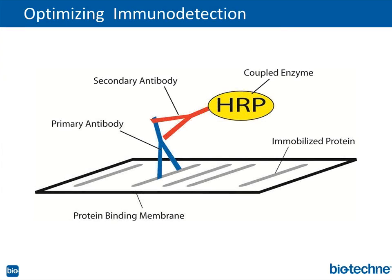Assuming that transfer worked wonderfully, we now want to move into immunodetection. Of course, we could stain the blots first. A quick comment on staining: there are reversible stains and irreversible stains. The key message is that if you're going to do downstream antibody-based immunodetection, you want to use a reversible stain, because if it's irreversible it will block your epitopes permanently and you'll never be able to detect with an antibody.